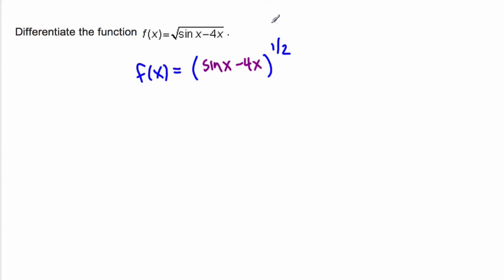Outside is to the power of half, inside is sine x minus 4x. So the chain rule says to take the derivative of the outside, leaving the inside alone, so bring down the half, leave the inside alone,